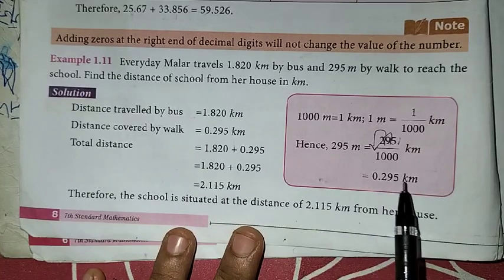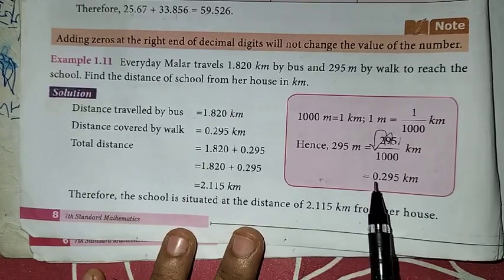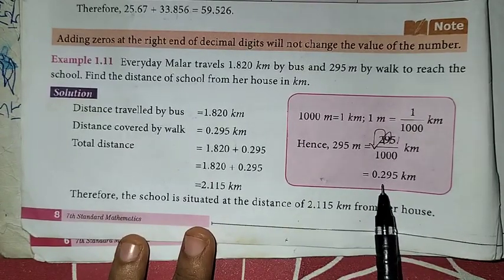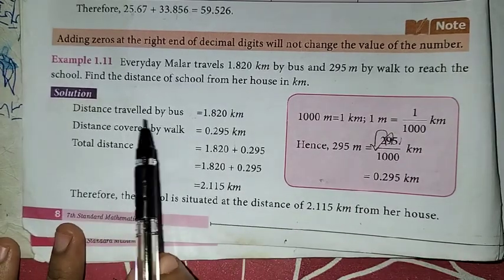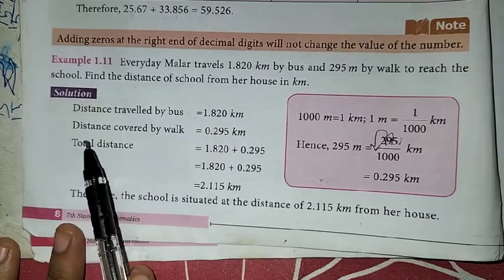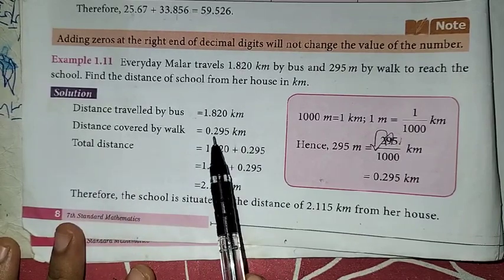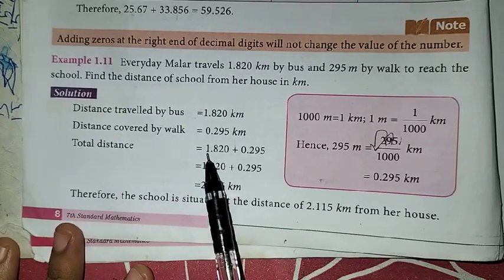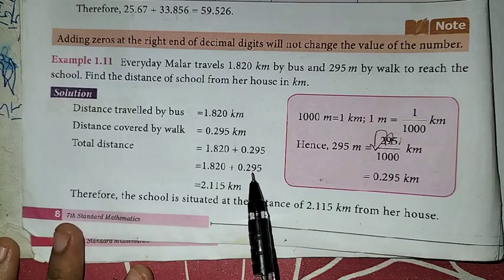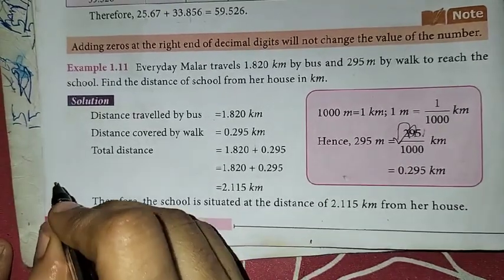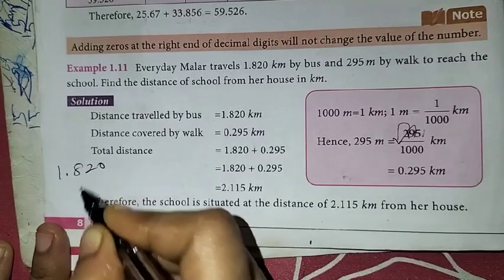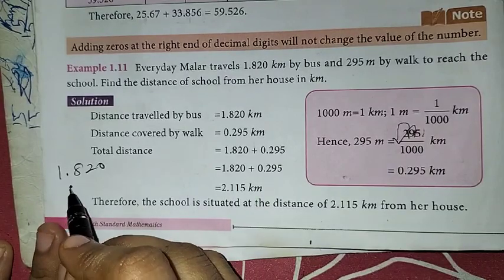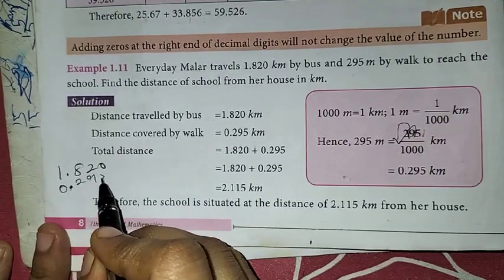So 295 meters converted to kilometers gives us 0.295 kilometers. Distance traveled by bus is 1.820 km. Distance covered by walk is 0.295 km. Now we will add to get the total distance: 1.820 plus 0.295. We will arrange the decimals — decimal point aligned: 1.820 and 0.295.